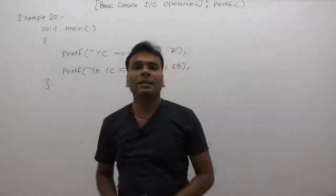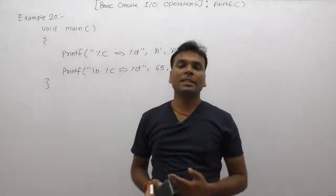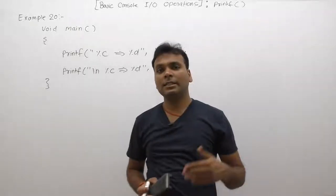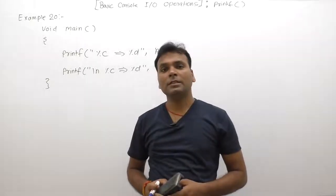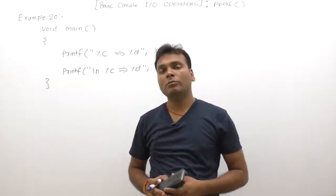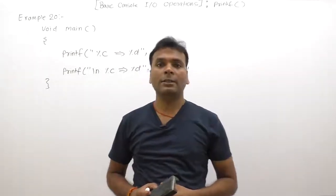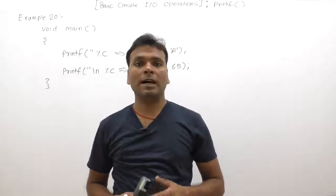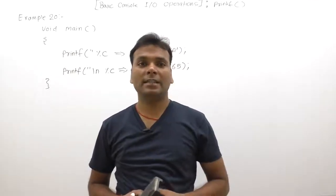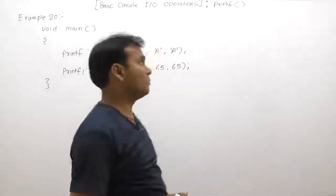Let's see, here we are testing format specifiers %c and %d. As we've seen, by using %c, we can display character value or symbolic representation. By using %d, we can display ASCII value of any characters or symbols.